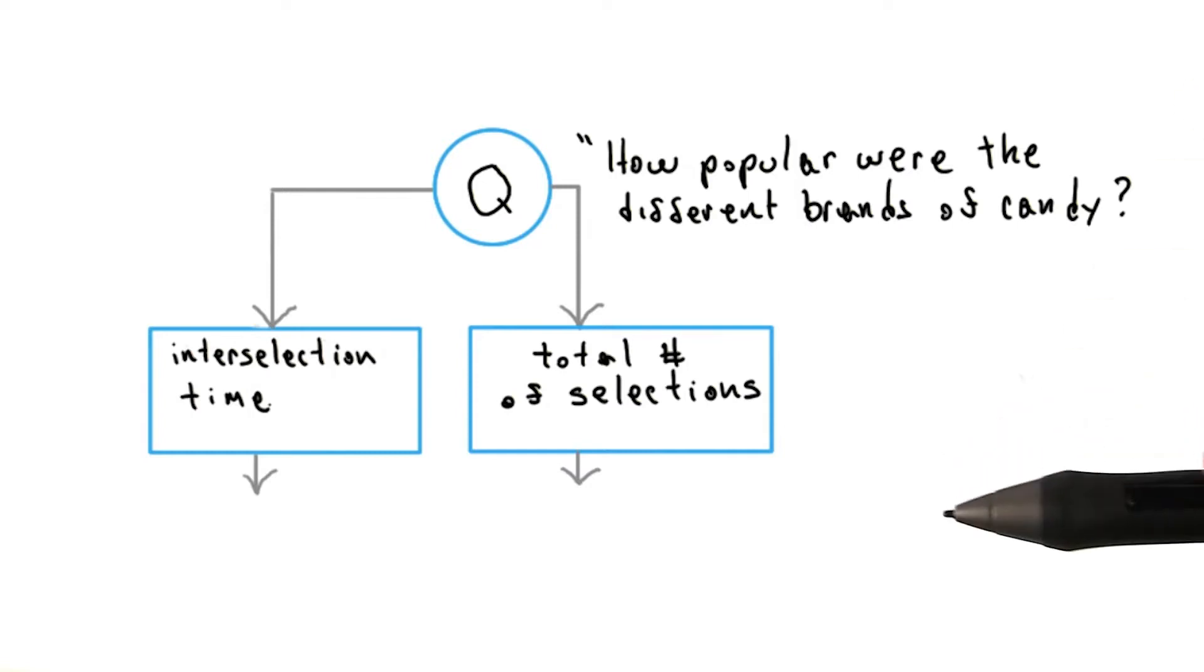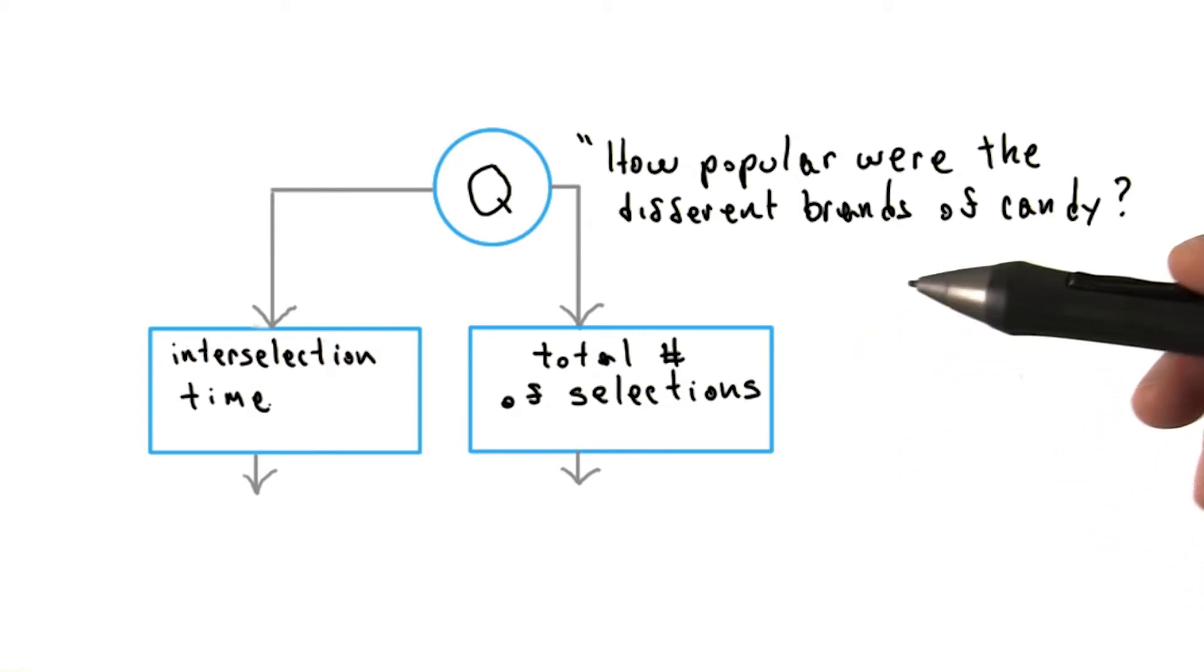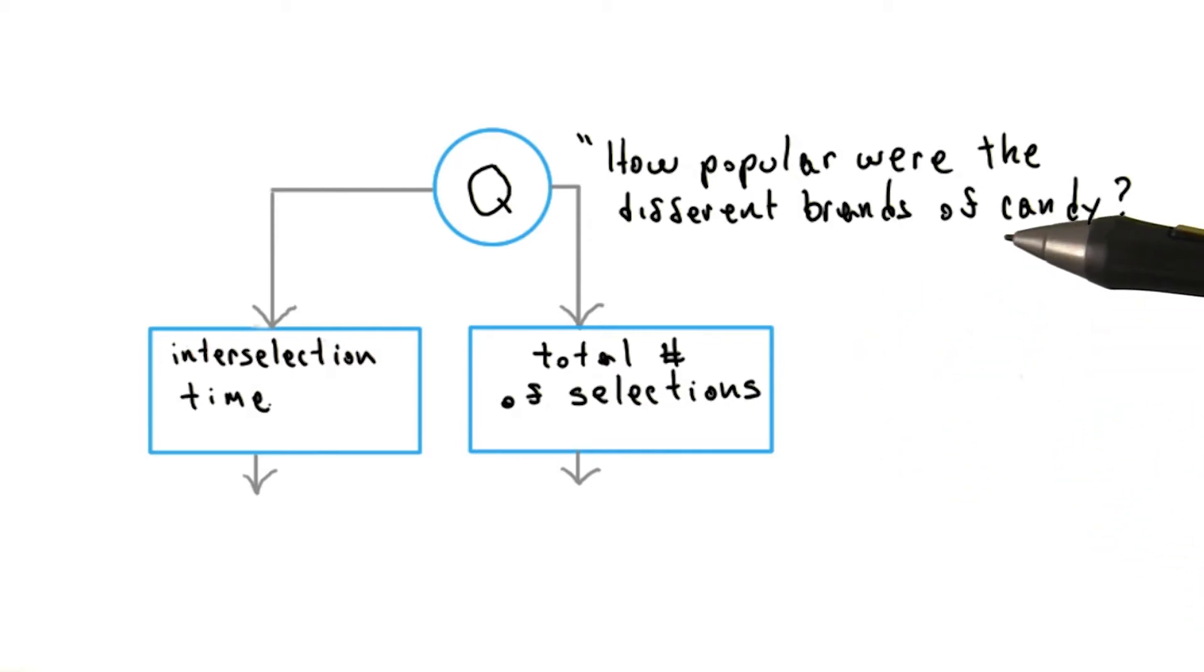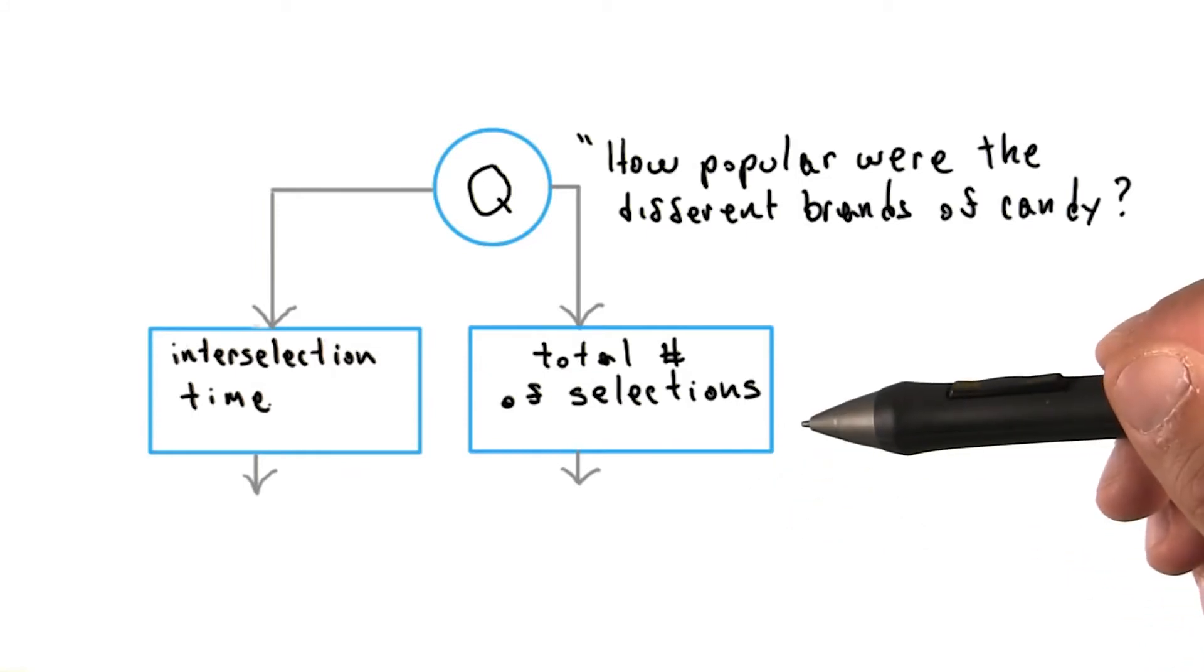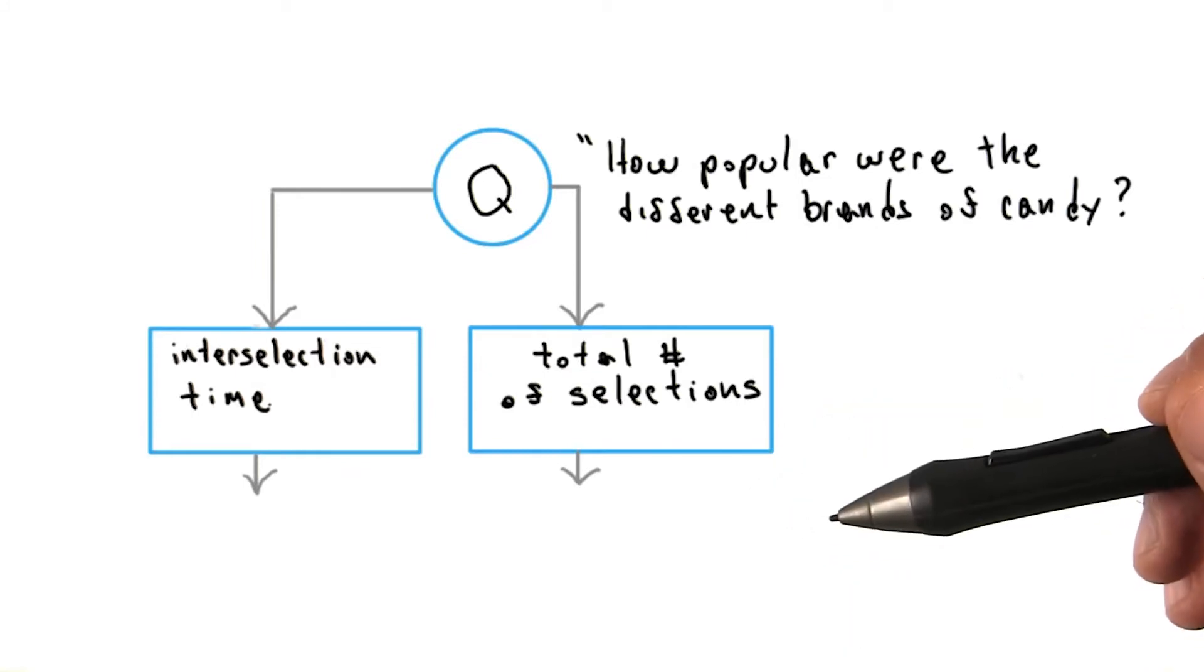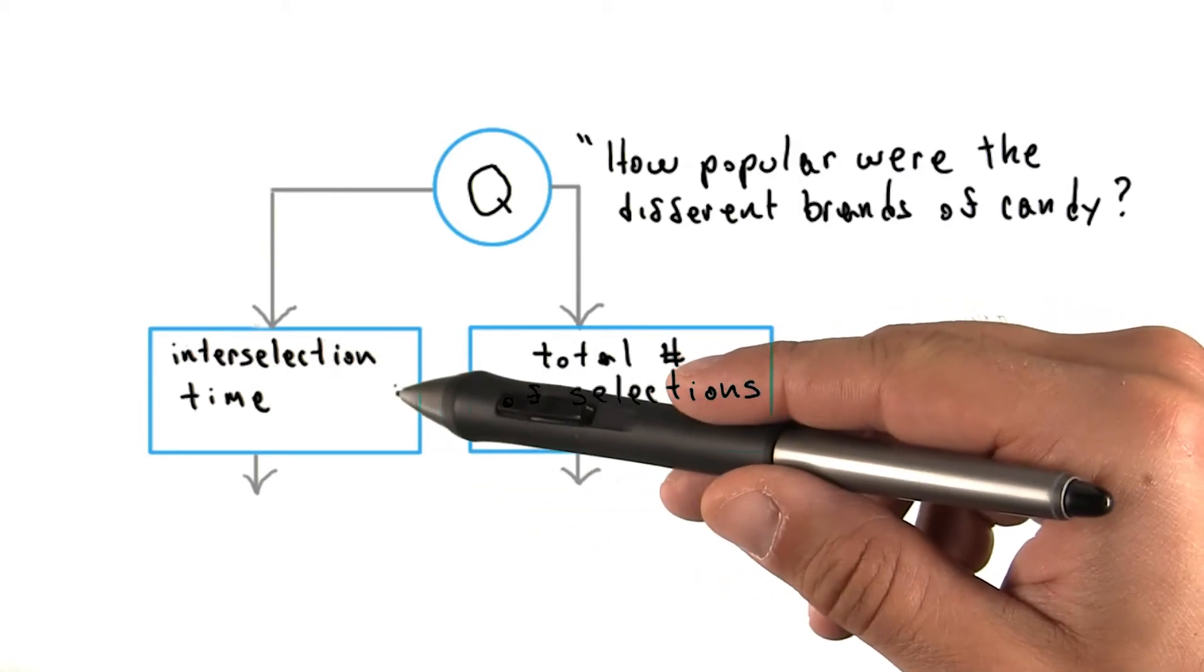At the end of the previous video, we ended at the following iteration with the following paths forward. We started with a vague question: how popular were the different brands of candy? And we considered two possible metrics, interselection time and total number of selections, for quantifying this question. We ended up choosing as an initial guess, interselection time.